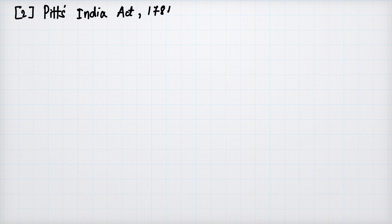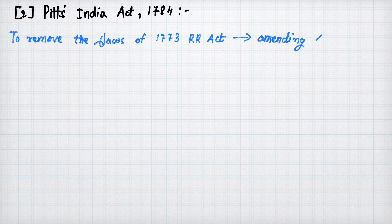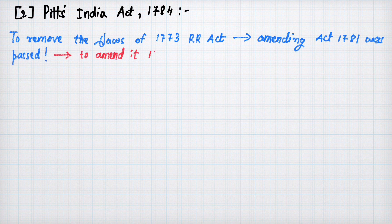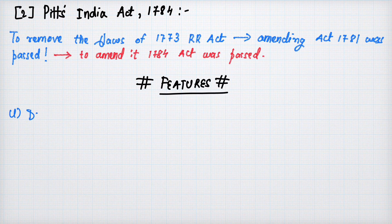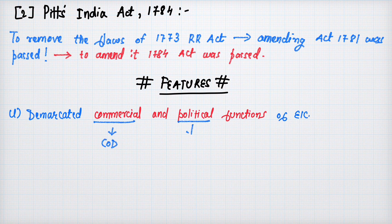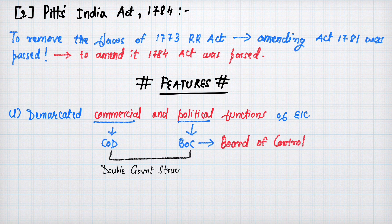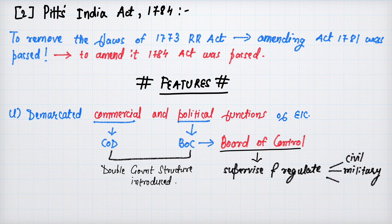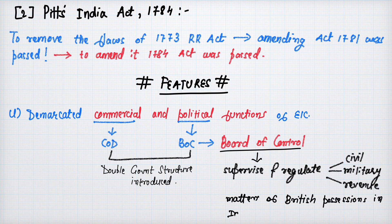Now, Pitt's India Act of 1784: to remove the flaws of the 1773 Regulating Act, an Amendment Act came in 1781, and then the Pitt's India Act came in 1784 to improve upon that. The most important feature was the demarcation between the commercial and political functions of the East India Company. The Court of Directors was given responsibility for commercial functions.